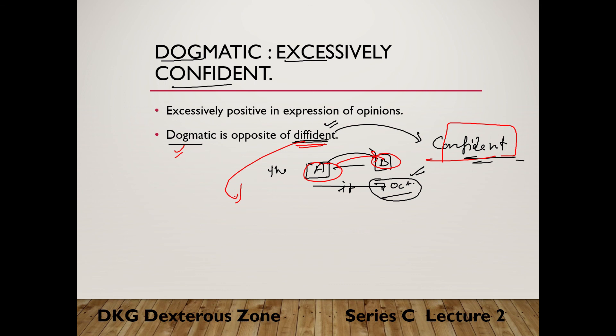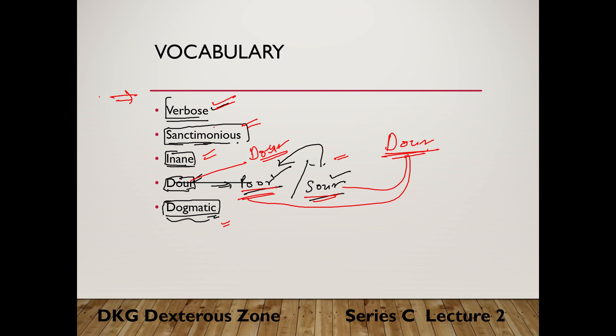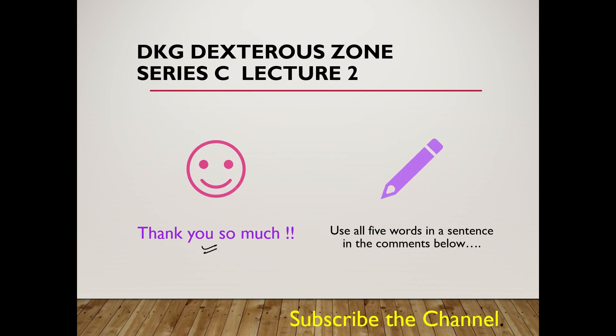So, to recap all five words: verbose — a person who uses so many words to express themselves; sanctimonious — a person who tries to show their virtuousness as far superior compared to others; inane — pointless, no sense, no meaning; dour — very strict, very stern; and dogmatic — excessively confident and positive in expression of opinion.